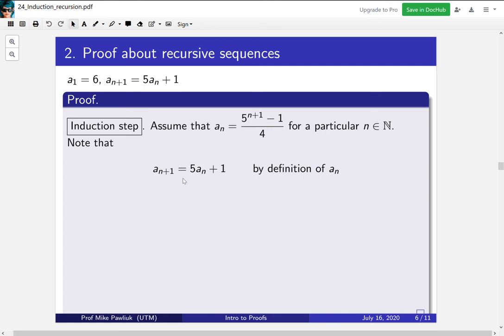Next, what can we replace in this, in this 5aₙ plus 1? Do we know anything about aₙ? Well, we know exactly one thing. We know that it's of this form. So we replace it. This plus 1 should be outside the bracket. Sorry about that.